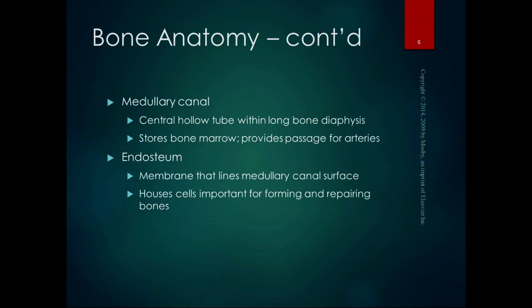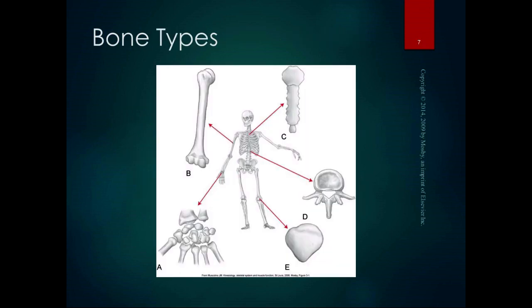The medullary canal is the central hollow tube within the diaphysis of a long bone. It stores bone marrow and provides passage for arteries, which is really important for the metabolic properties of the bone. The endosteum is the membrane that lines the medullary canal surface. Contained within the endosteum are cells important for forming and repairing bones — the osteoclasts, which break down bone to release calcium and phosphorus, and the osteoblasts, which repair and strengthen bone and store calcium. The endosteum inside the medullary canal is really important for the metabolic activity of bones.